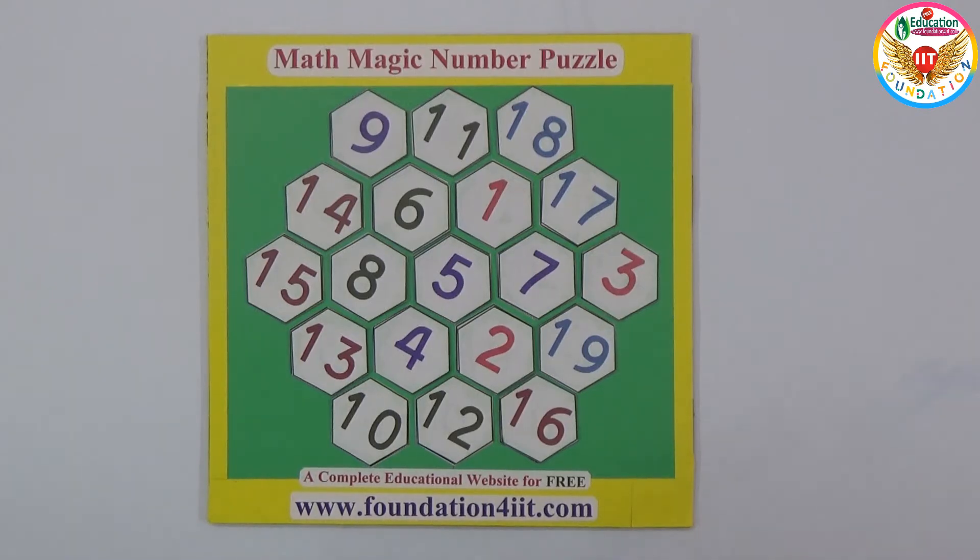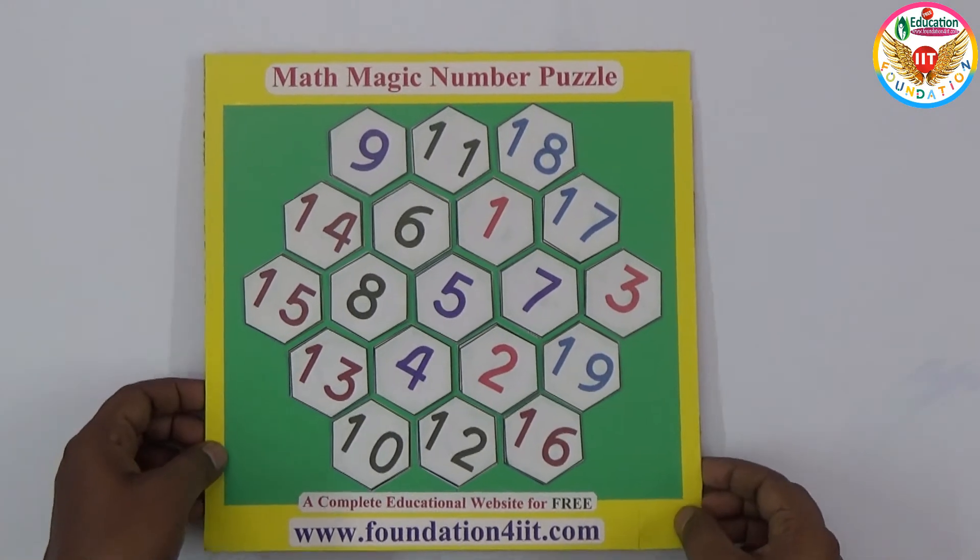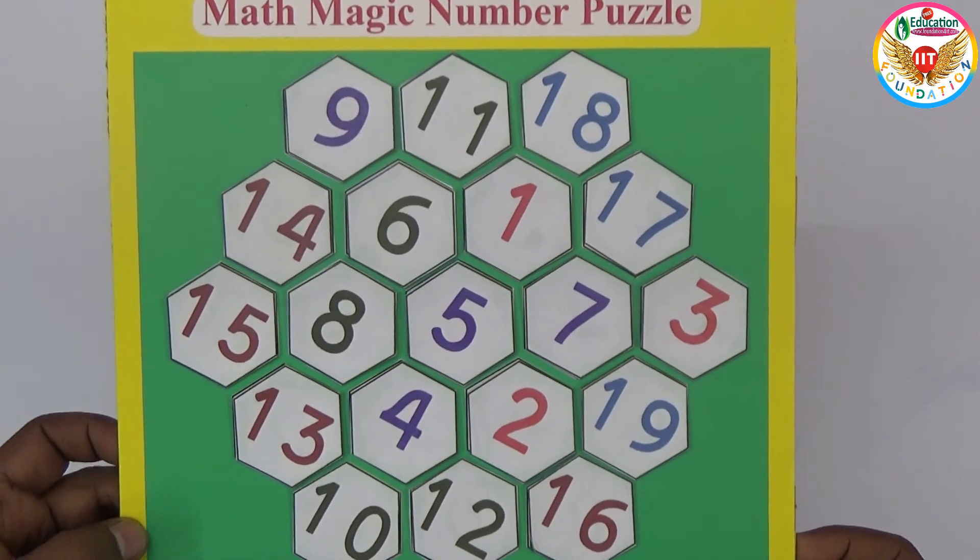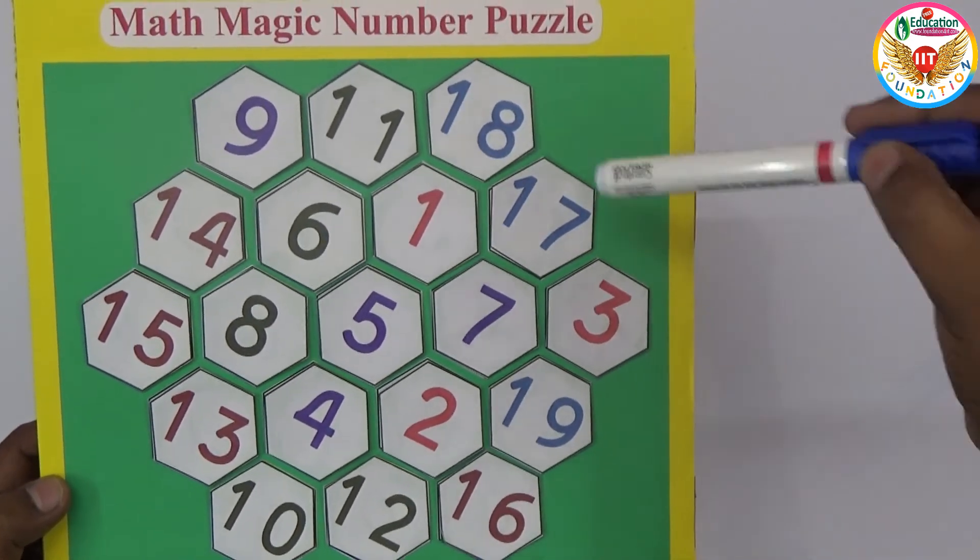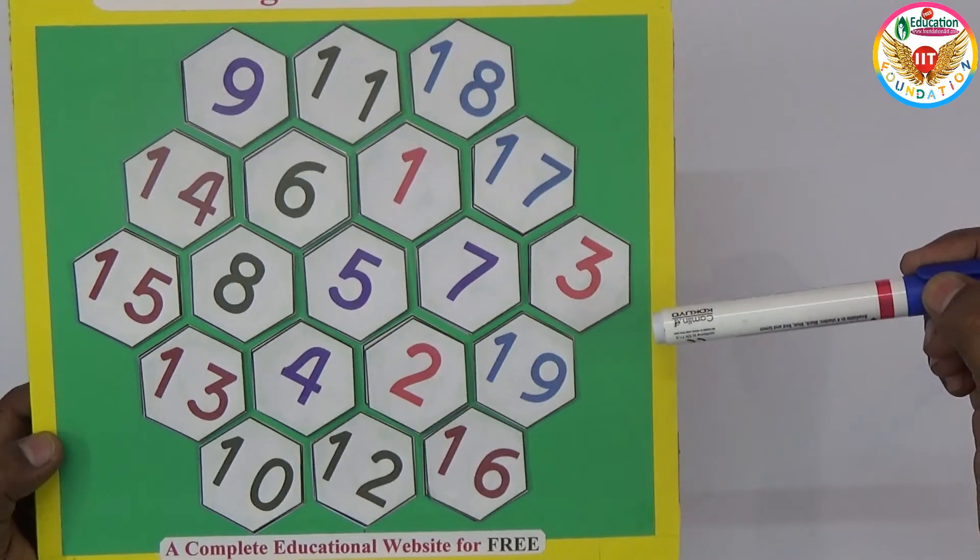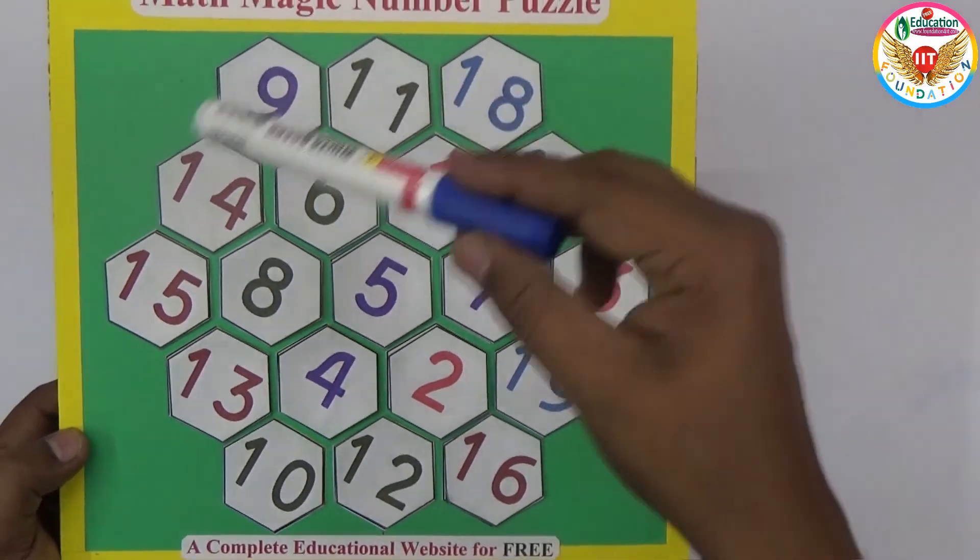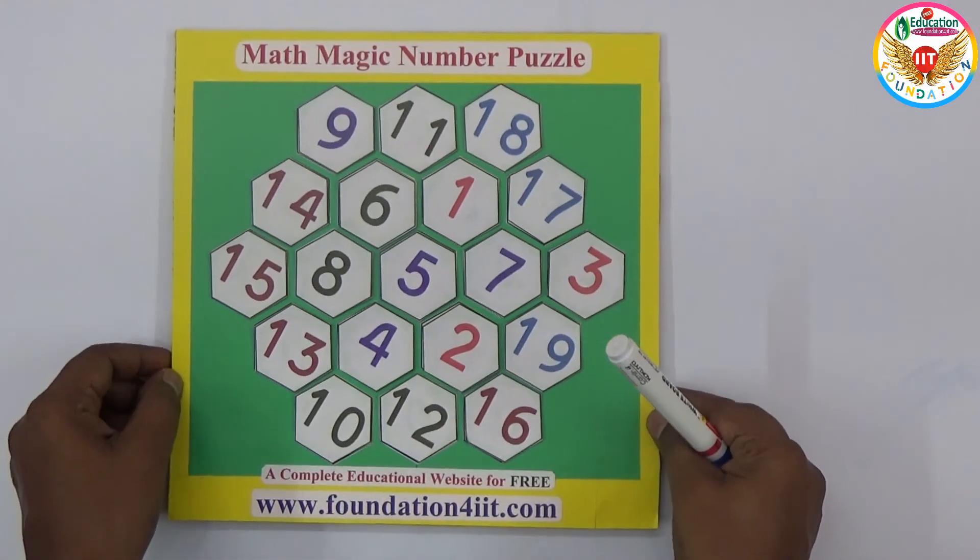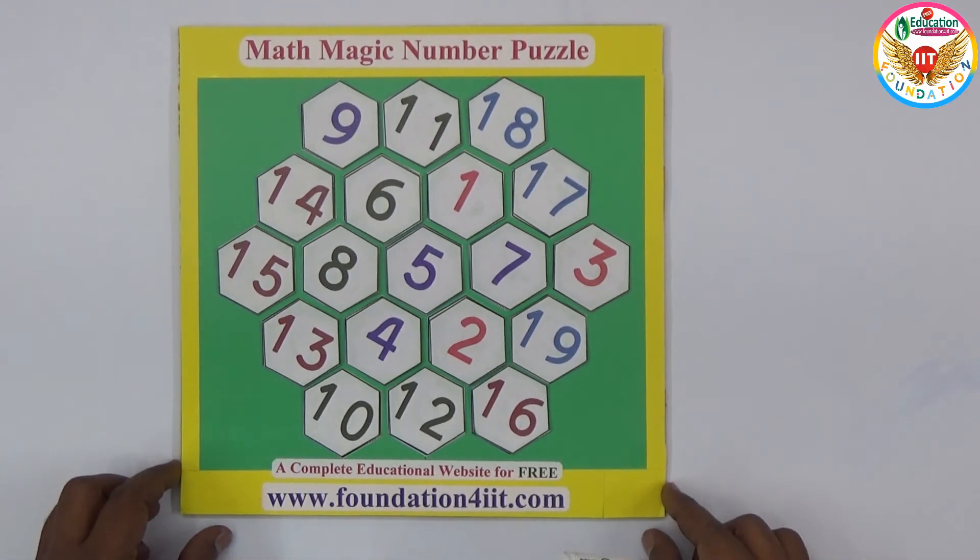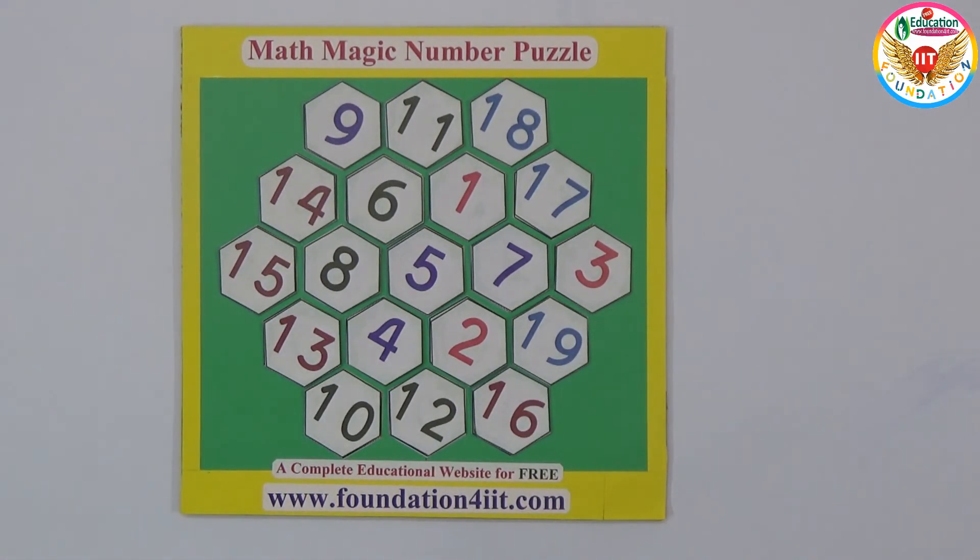So this is the solution for complete this puzzle. Any straight line numbers if added, the sum should be exactly equal to 38. So 18, 17, 3 equals 38. There are 15 ways you can make the sum of the straight line numbers exactly equal to 38.